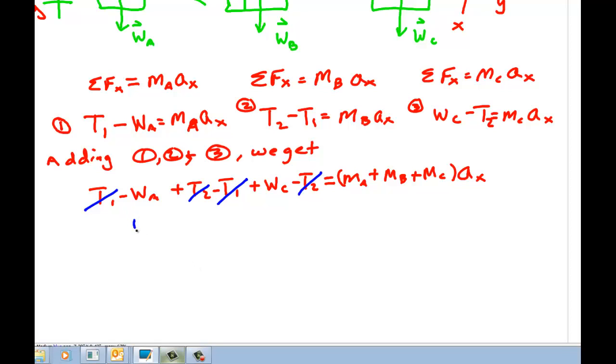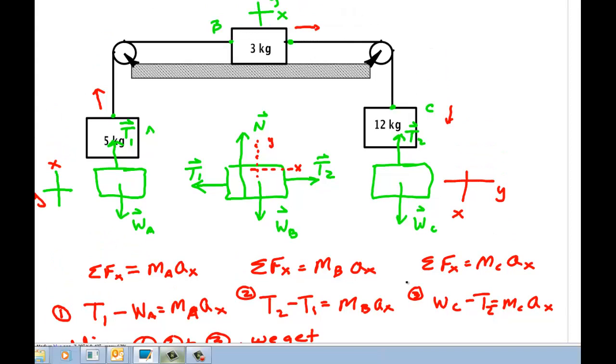So I have W_C minus W_A is M_A plus M_B plus M_C times a_X. Notice the strings have gone completely away. I want to go back and look at the diagram just a little bit. So what we're saying is if I consider this whole thing to be a single object like I did in the previous video, then the only forces external are not these ropes. They would be internal.